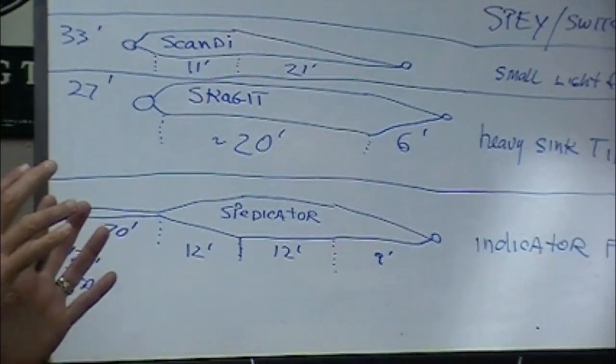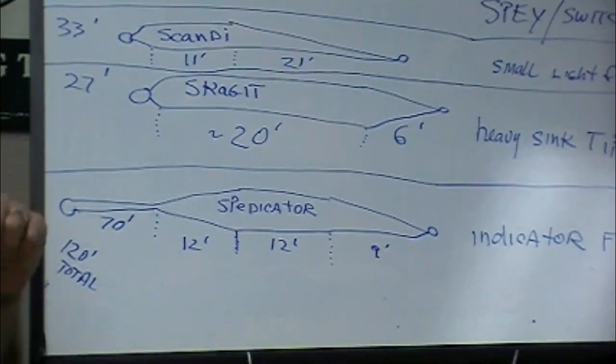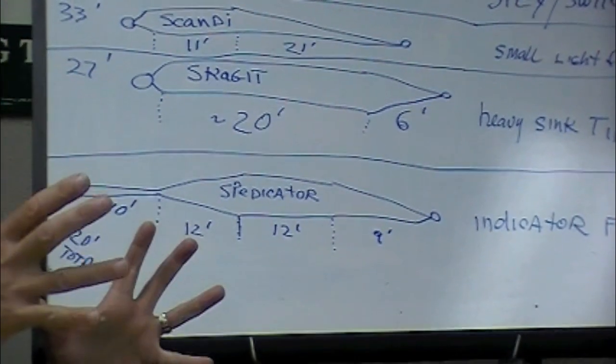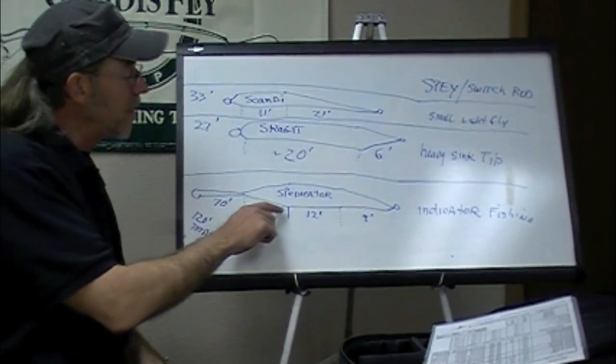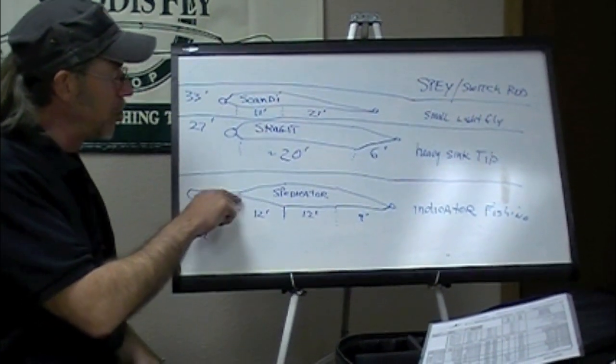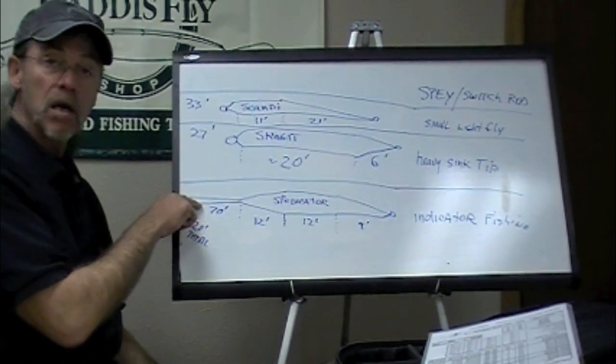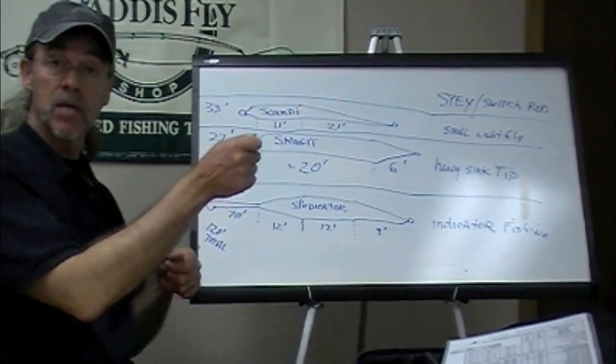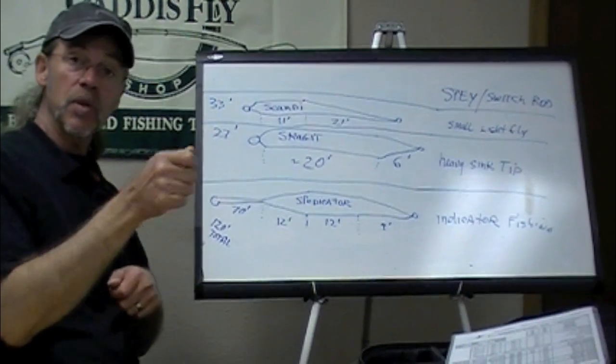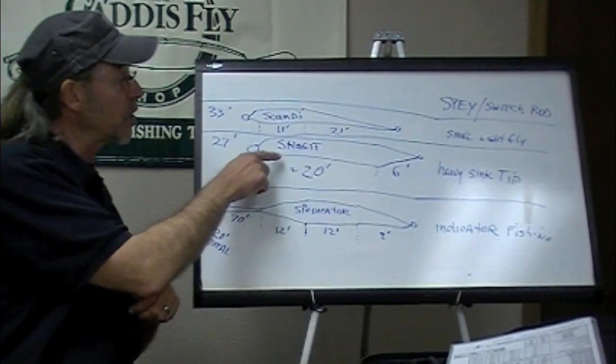The taper is so you can turn over—it doesn't just clunk down in a big wad. This back taper and the really long level handling line allow you to mend much better than you can with a Skagit.